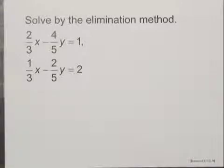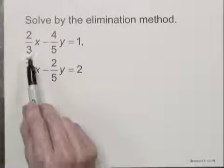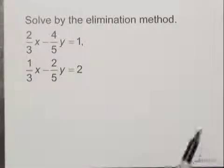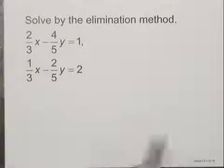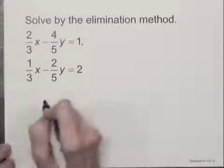Now we could work with this system with the fractions in it, or we could choose to clear the fractions, and let's clear the fractions. We'll multiply each equation by the least common multiple of its denominators. I have denominators of three and five in the first equation. The least common multiple is fifteen, and it's the same situation in the second equation. So let's do those multiplications.